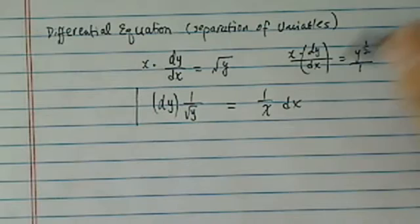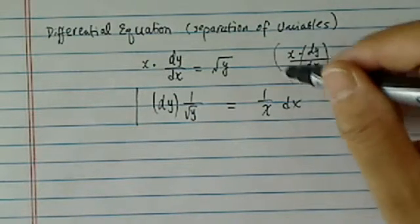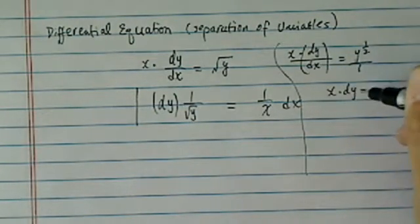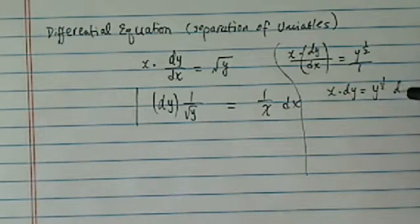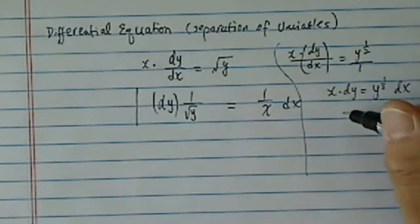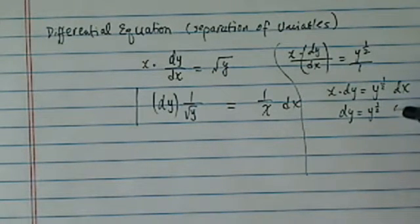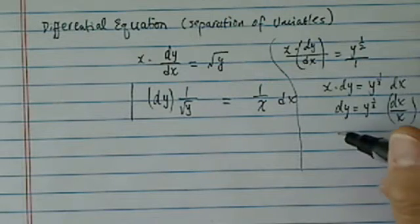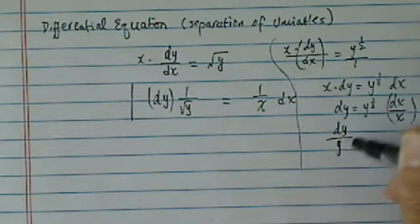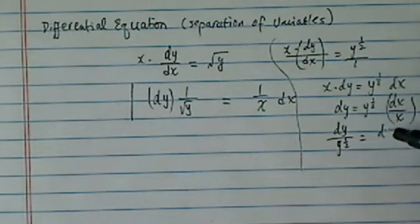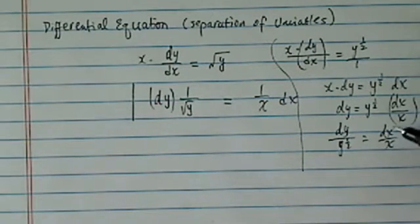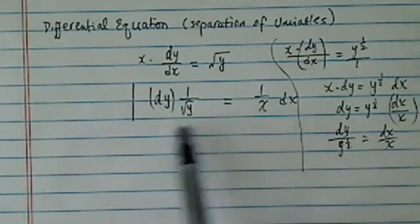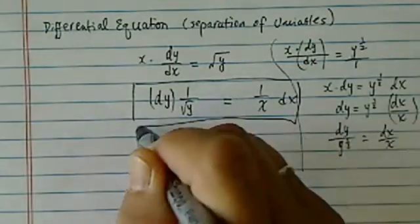What I did here is multiply dx on both sides. So I have x times dy is equal to y to the half dx. Now I need to get x and dx together so I'm going to divide by x. Then I have dy is equal to y to the half dx divided by x. Now since y has to go with dy, I'm going to divide it. Then I have dy over y to the half is equal to dx over x. This step is actually a pretty important step.